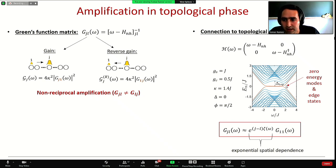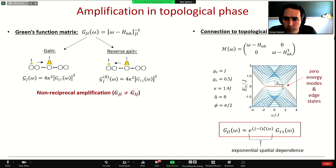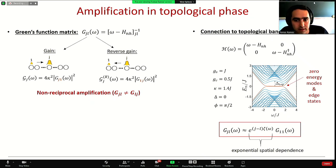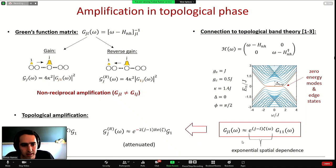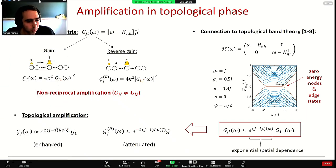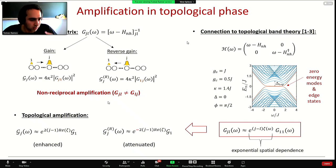the system presents zero-energy modes inside a topological band gap. Associated to these zero-energy modes there are edge states that are exponentially localized on the boundaries. In the real amplifier this means that the Green's function has an exponential spatial dependence with respect to the first site, where zeta is the correlation length of the edge states. The gain is exponentially enhanced and the reverse gain is exponentially attenuated — this is topological amplification, which is both non-reciprocal and exponentially enhanced.